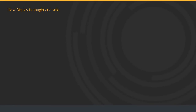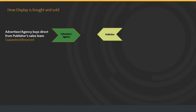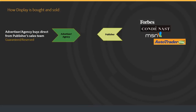Here are the most common ways that display has been bought and sold over the last five to ten years. First, an advertiser or agency buys directly from a publisher sales team for guaranteed inventory. The publisher has their own direct sales team. An example might be a homepage takeover ad on Yahoo or MSN Finance. It's futures-based buying — the ad, the price, and the impressions are all guaranteed. Examples include MSN, Forbes, Condé Nast, Autotrader, and other premium publishers. These are considered premium buys, typically more expensive and guaranteed.